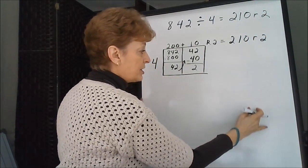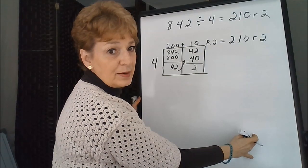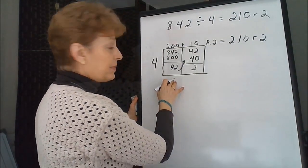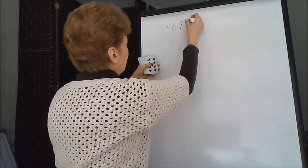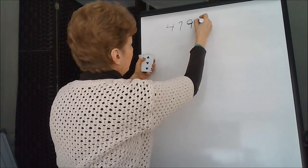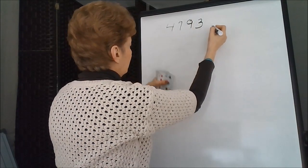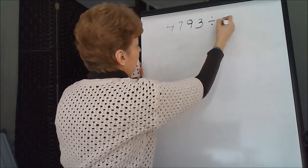So our subtraction, instead of going along the side like we've done before, happens within the boxes. 4793 divided by 9.